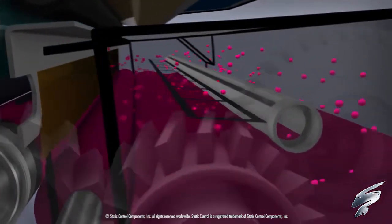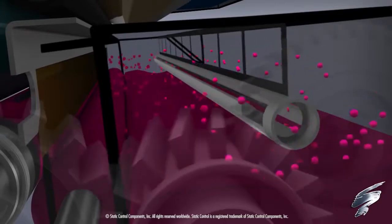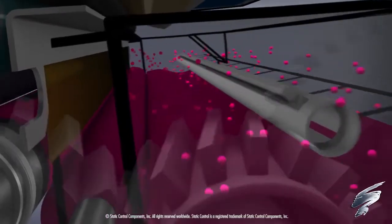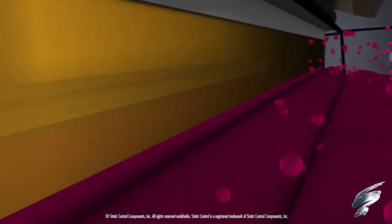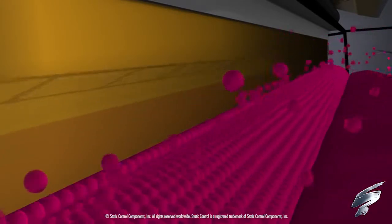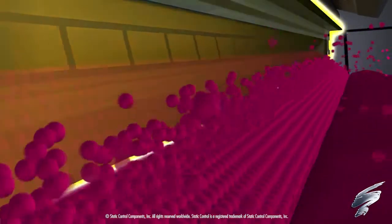Toner is stirred in the hopper. The toner adder roller collects the toner, moving it to the surface of the developer roller. The doctor blade then levels it to the precise height.